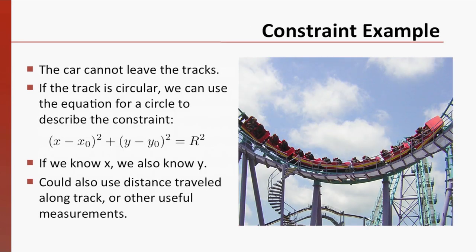Here is a classic example of a situation with a constraint. The car on this roller coaster cannot leave the tracks. If the track is circular, we can use the equation for a circle to constrain our movement. We can use this to reduce the number of variables in our equations for the position of the roller coaster.